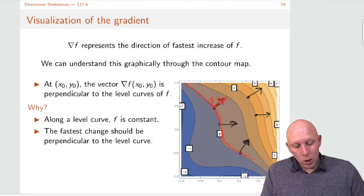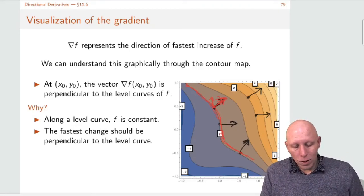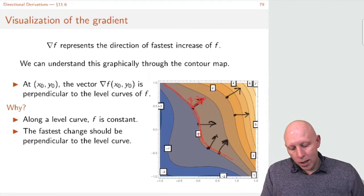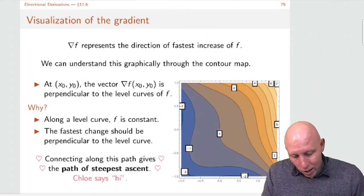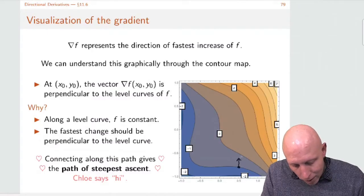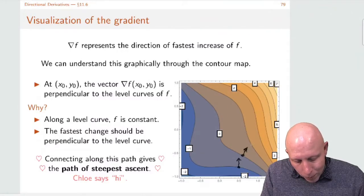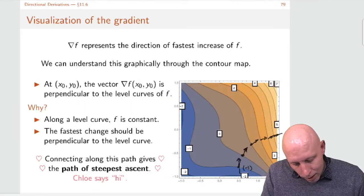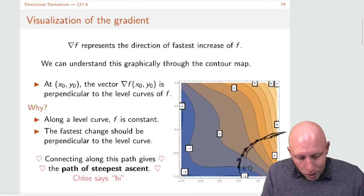So once we have these vectors, we can draw the gradient vector at any point, and if you connect a whole bunch of them along the way, you get the path of steepest ascent. So if we were here and wanted to go up as fast as possible, we would follow the path here, then here. This is the fastest way from a function value of negative one to a function value of five.